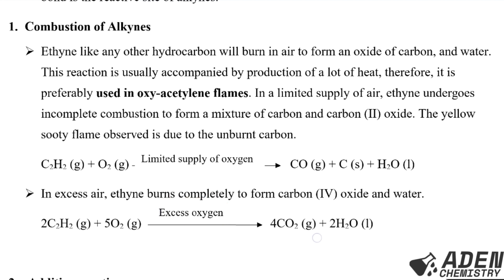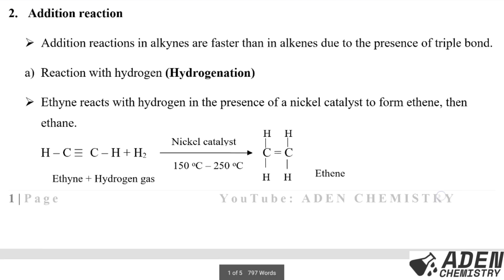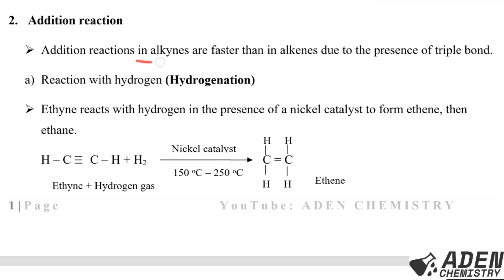Number two is addition reactions. Addition reactions in alkynes are faster than in alkenes due to the presence of the triple bond. The first addition reaction is with hydrogen, called hydrogenation. Ethyne reacts with hydrogen in the presence of a nickel catalyst to form ethene, and then ethene to form ethane — this reaction occurs in a two-step way.